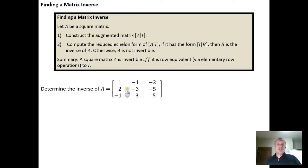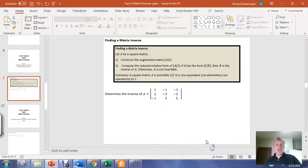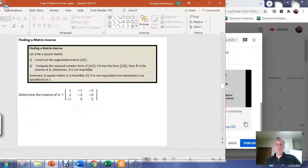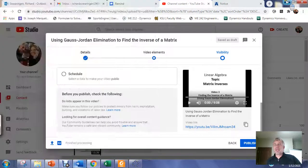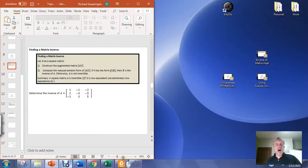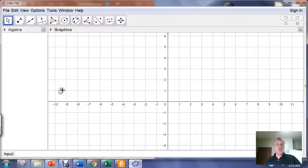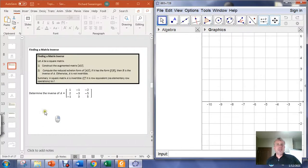The idea is that we are going to use GeoGebra. As we saw in the previous video, what we want to do is augment the matrix we're interested in — if we're wanting to find the inverse of A, we want to augment A with the appropriate identity matrix.